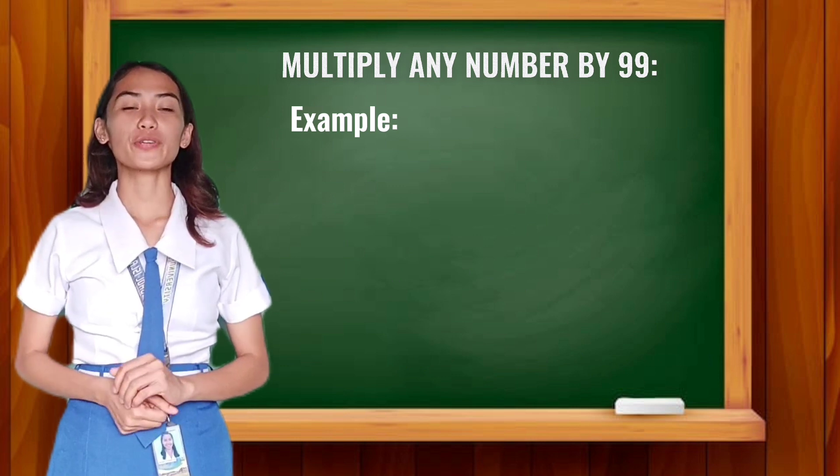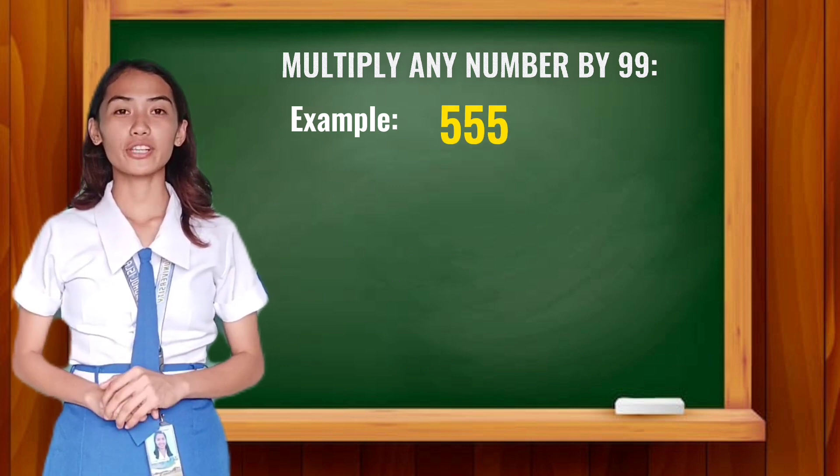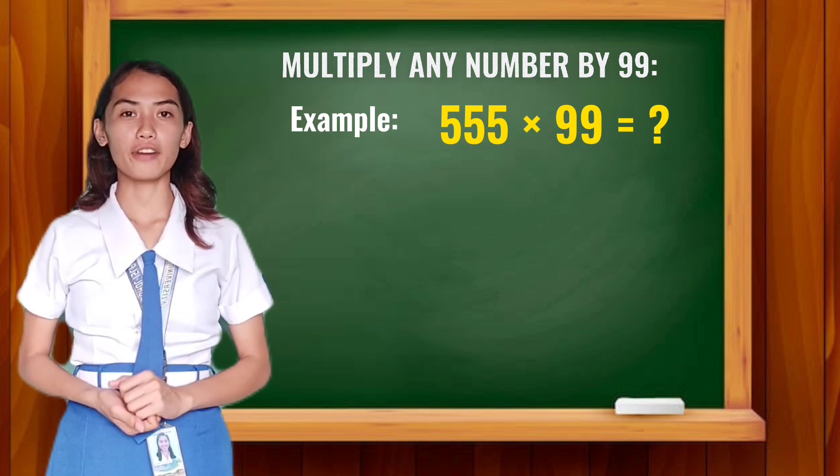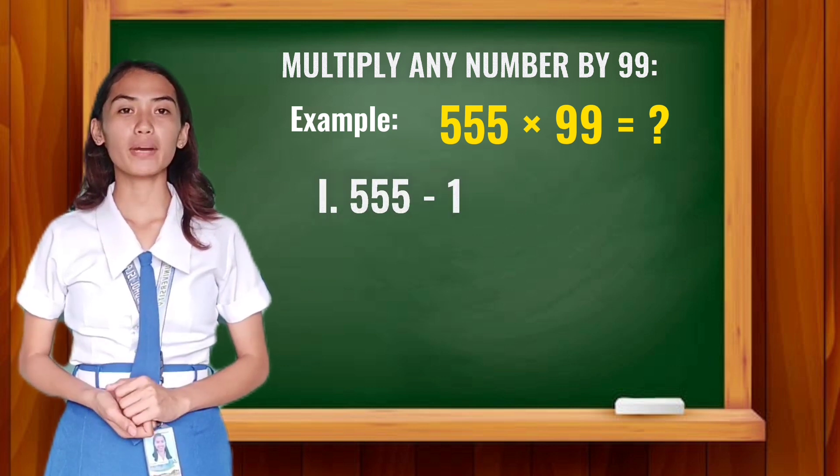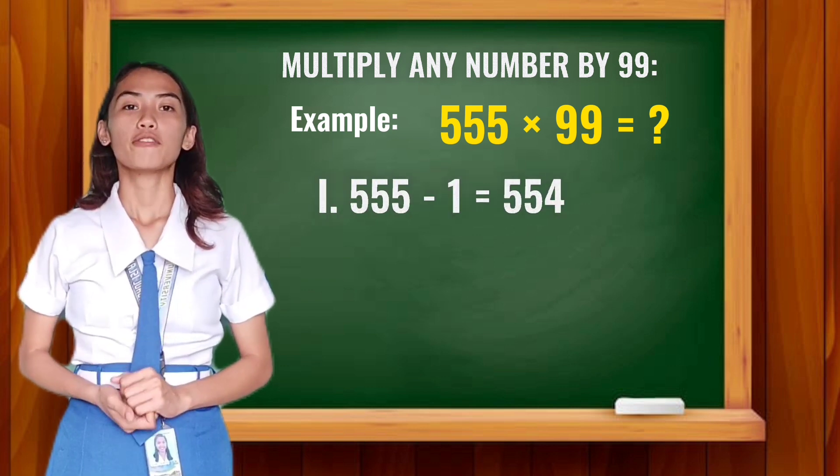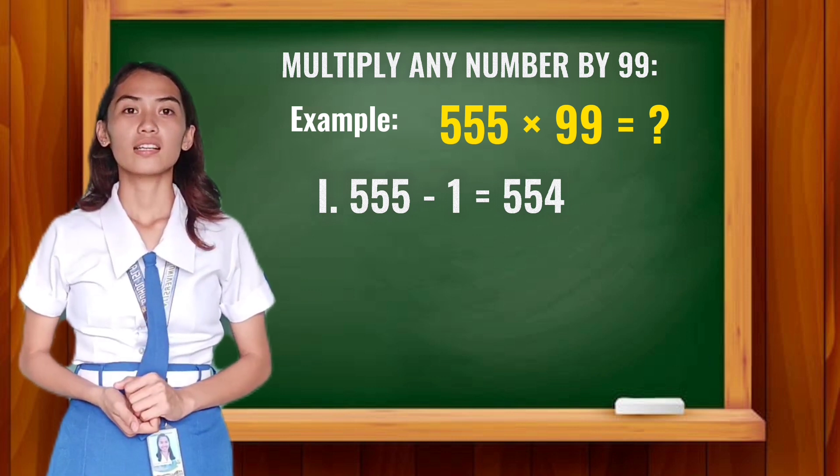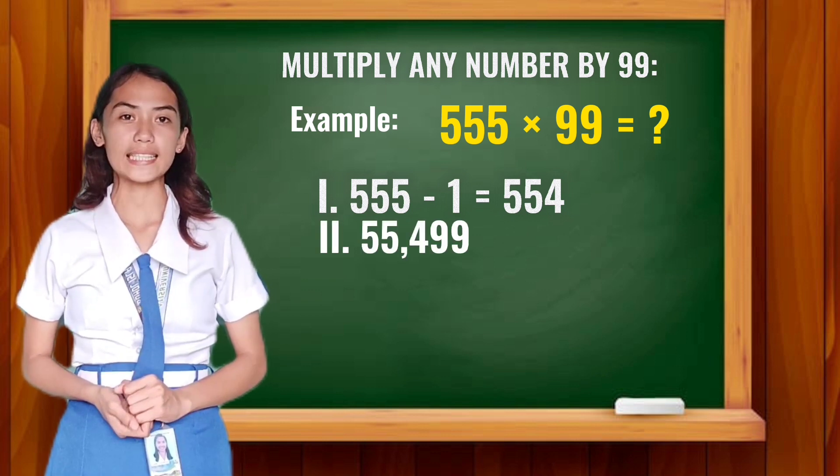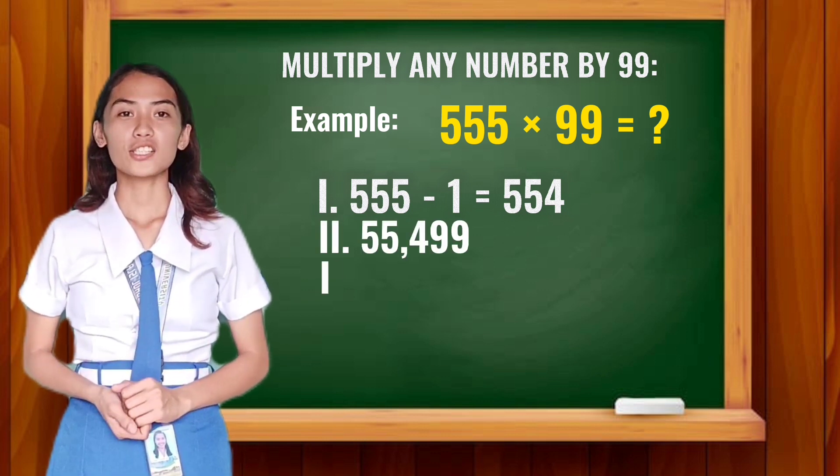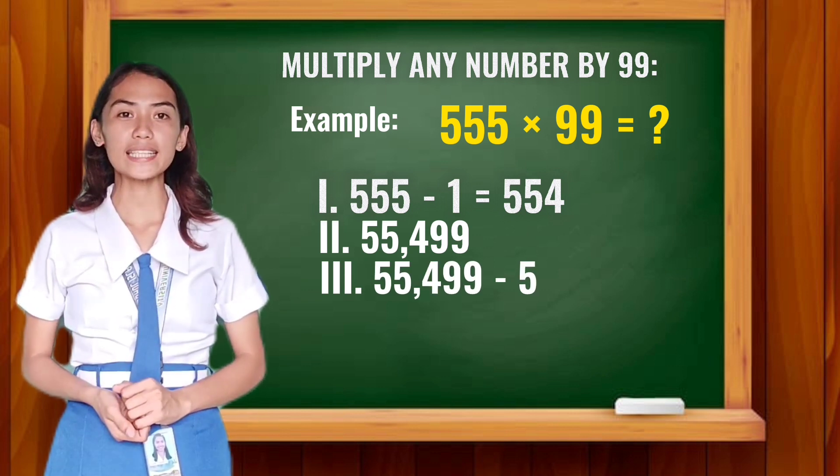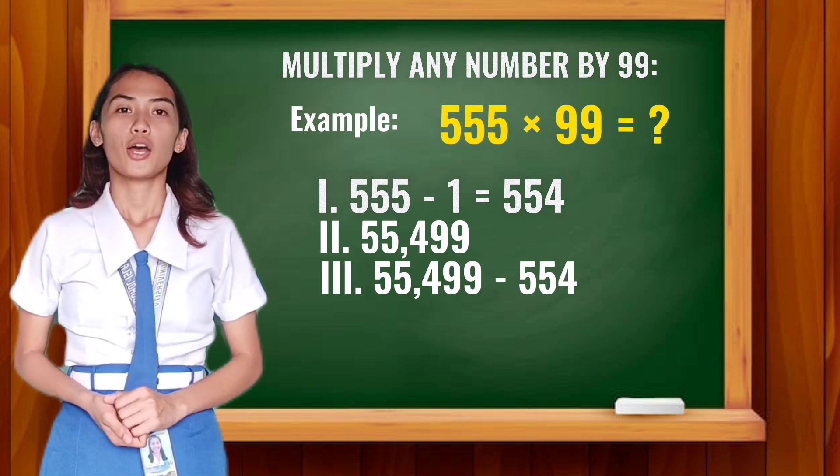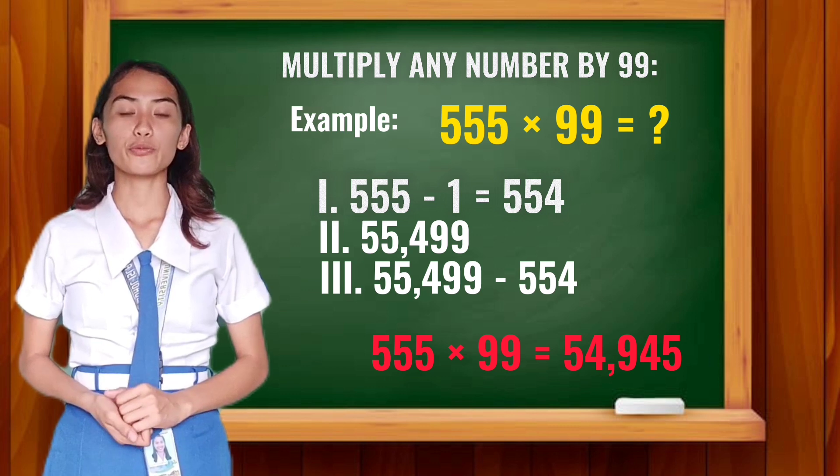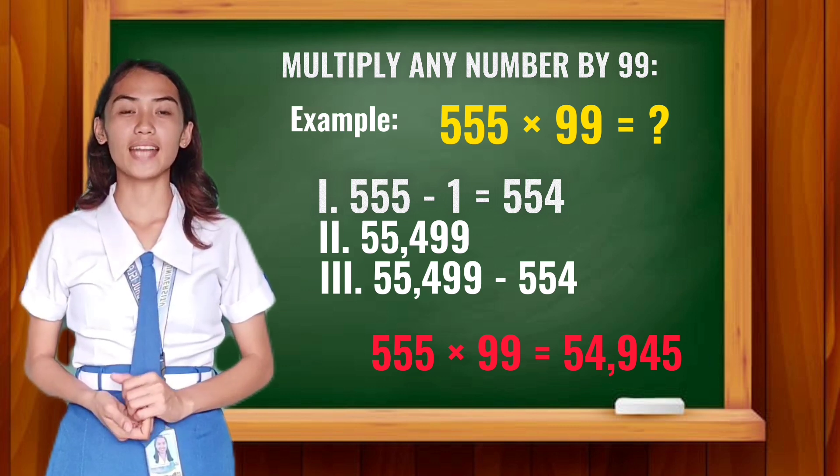So we have another example. We have 555 times 99. First step: Subtract 555 by 1. So 555 minus 1 is equal to 554. Next, copy 554 together with 99. It will be 55,499. Then, subtract 55,499 by 554. Therefore, 555 multiplied by 99 is equal to 54,945.